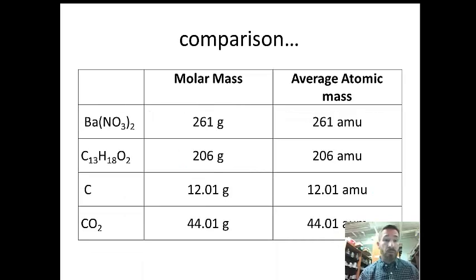Both of these are based on the mass of carbon-12. For example, the molar mass of barium nitrate is 261 grams, and the average atomic mass is 261 AMUs. The molar mass of ibuprofen was 206 grams, and the average atomic mass was 206 AMUs. The average mass of a mole of carbon is 12.01 grams, and the average mass of a carbon atom is 12.01 AMUs.